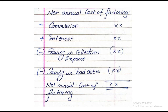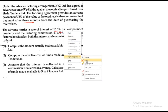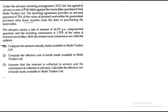Let us first go through what the question is about and then we'll see how to solve it. Under the advance factoring arrangement, XYZ Limited has agreed to advance 66 lakhs against the receivable purchased from Sahi Traders. The factoring agreement provides an advance payment of 75% of the value, so 66 lakhs is 75% — we need to find what 100% is. The advance is for 3 months at a rate of 16.5% per annum. Factoring commission is 1.75%. Both interest and commission are collected upfront.